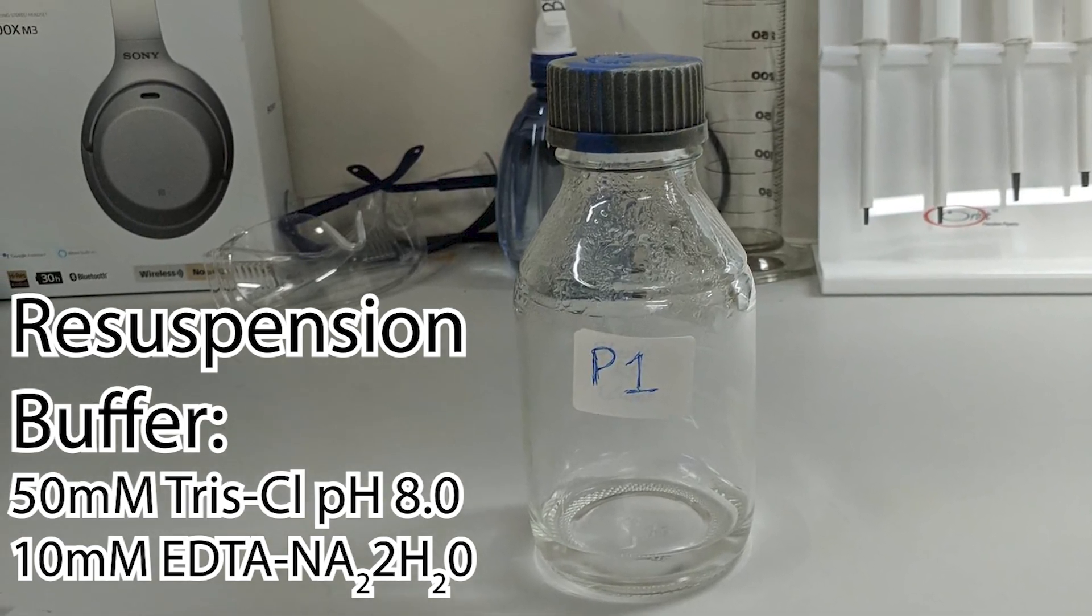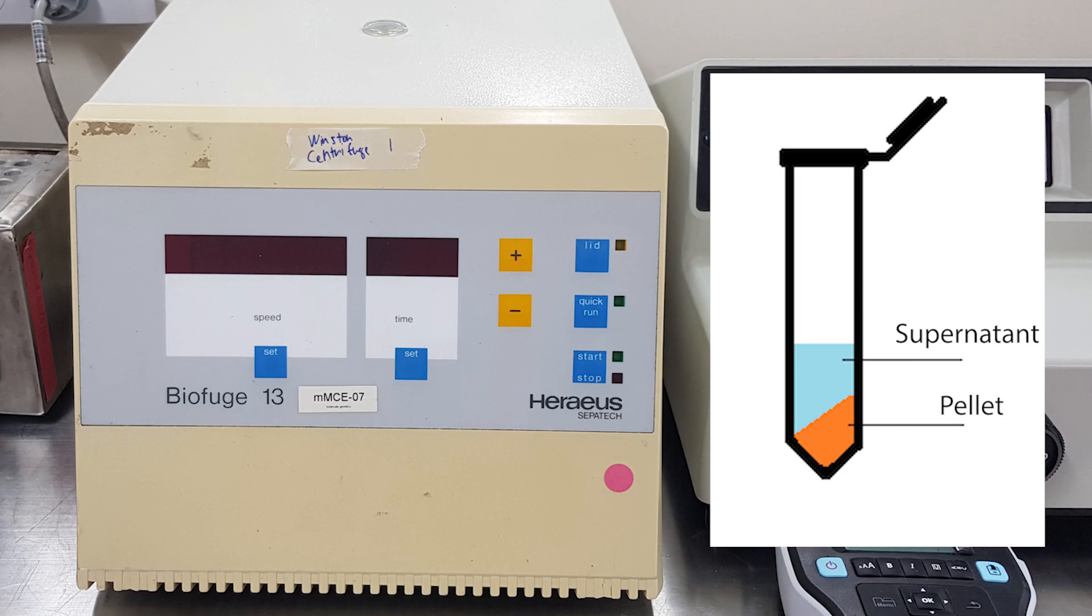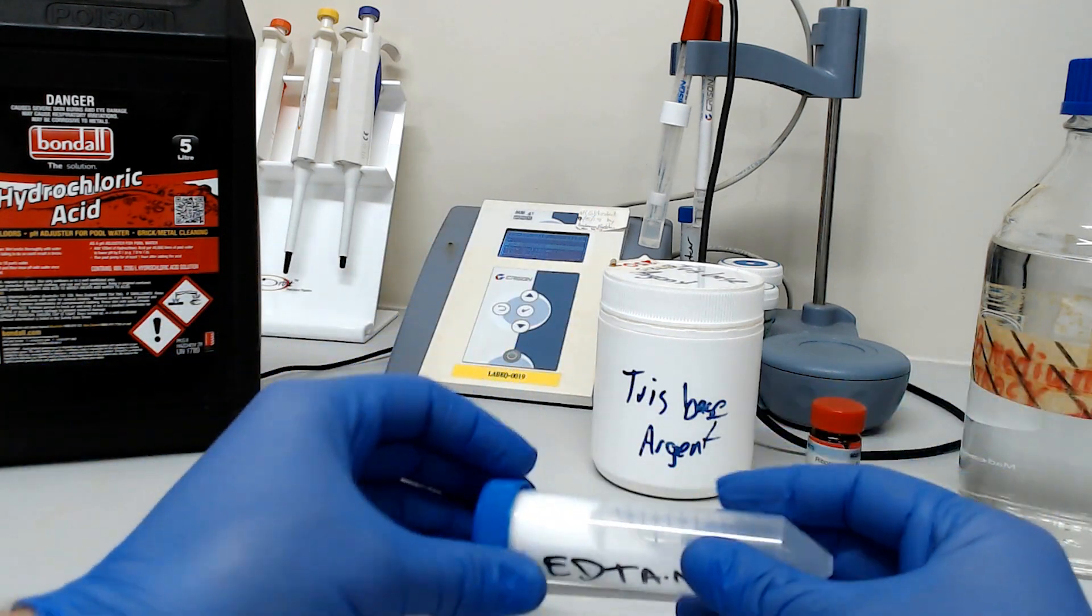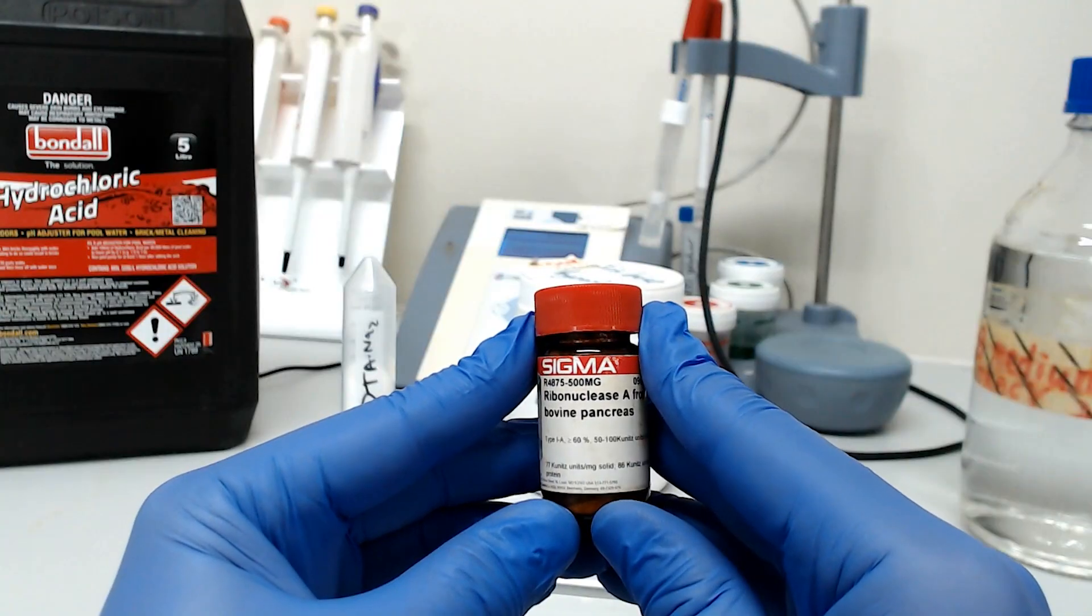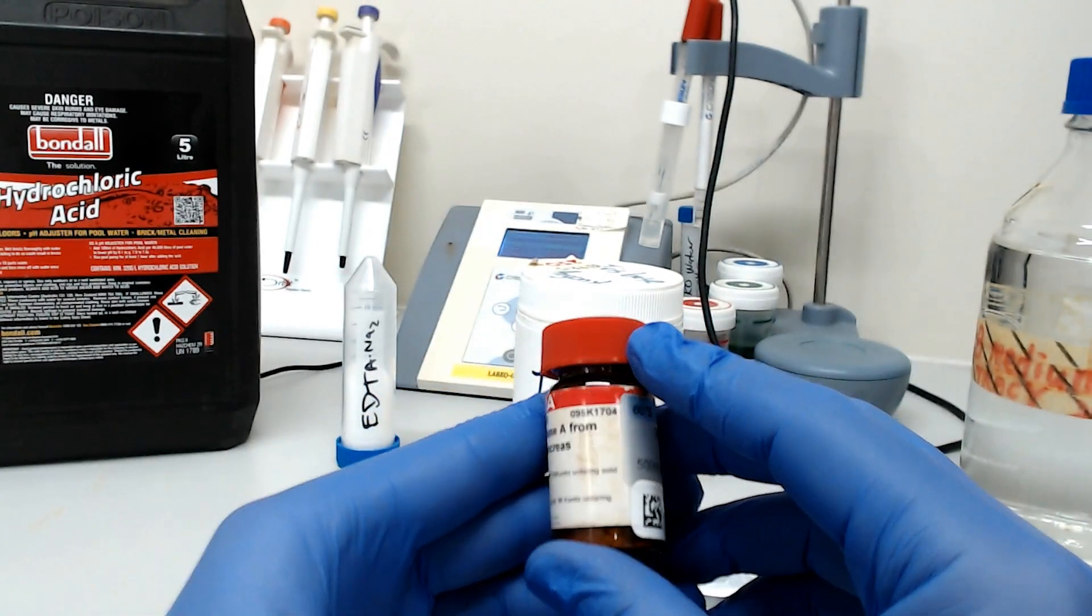The role of this buffer is to provide a medium to resuspend your cells after you've centrifuged them into a pellet and discarded the supernatant. It contains EDTA to reduce the effect of nucleases after lysis and we will add RNase to digest all the RNA that will otherwise be co-purified with our plasmids.